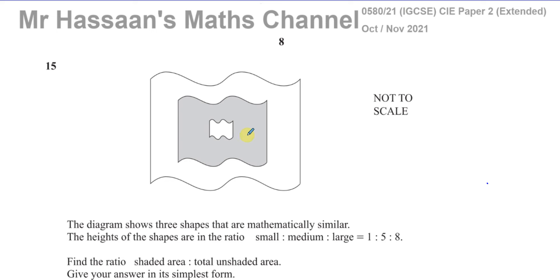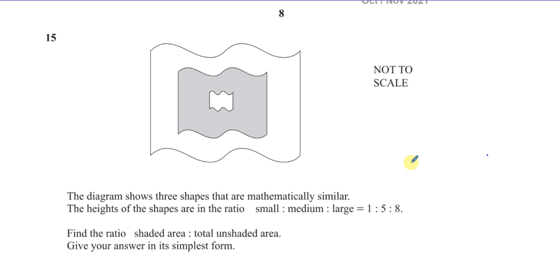This is about similarity. The diagram shows three shapes that are mathematically similar. So all these three shapes are mathematically similar. You've got this small kind of flag kind of shape, and then this one in the middle, and the big one. The heights of the shapes are in the ratio small to medium to large, 1 to 5 to 8.